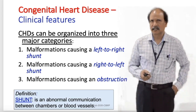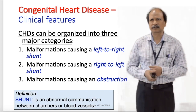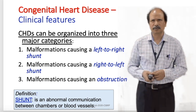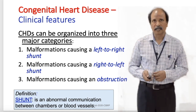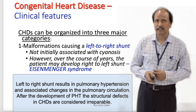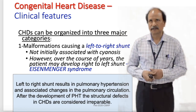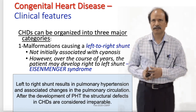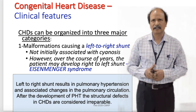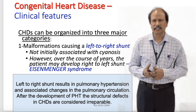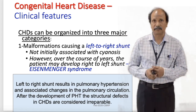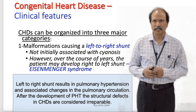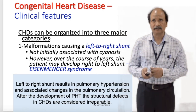Congenital heart diseases are classified depending upon the shunt — left to right, right to left, or simple obstruction. In left to right shunts, the left side of the heart has higher pressure and the right side lower pressure. When there is a shunt such as ventricular septal defect or atrial septal defect, blood flows from the left side into the right side, and this is not associated with cyanosis initially.